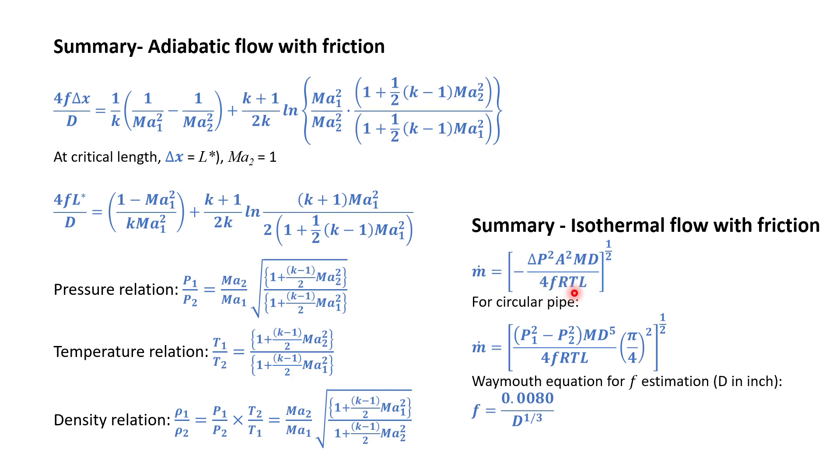The T here is constant because this is isothermal. It implies that the temperature is constant from the inlet of the pipe through the length of the pipe also at the outlet of the pipe. The friction coefficient in this condition, isothermal flow, can be estimated using the Weymouth equation. Remember that D here must be in inch.